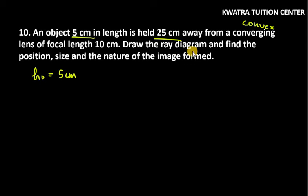Here you have to draw the diagram and find the position, size and nature of the image. F is given. In the case of convex lens, F is positive. U is negative, and here it is minus 25 cm.